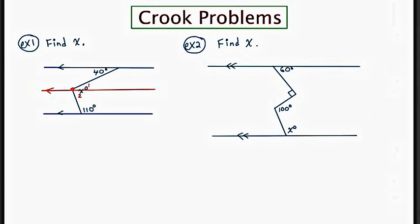Focusing on the top half of the diagram — thinking of one line as the top parallel line, one as the middle parallel line, and this piece as our transversal — the angle marked 40 and angle 1: if you outline this you hopefully see a Z shape, and whenever we see a Z that's a giveaway of alternate interior angles. If the lines are parallel, alternate interior angles are congruent, so if the top portion is 40, the bottom portion is also 40.